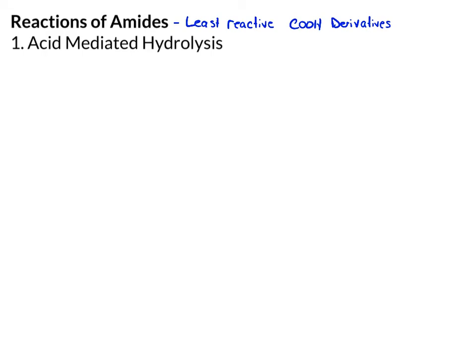We're first going to look at this acid-mediated hydrolysis, which falls in the type 2A category. Notice the term mediated — we're going to see why we need more than just a catalytic amount of acid.